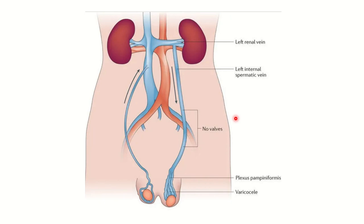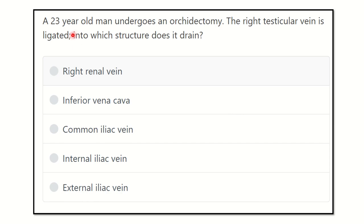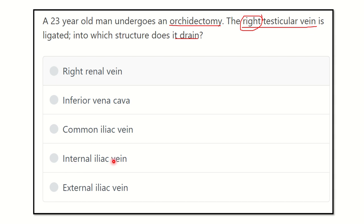Welcome to another session. A 23-year-old man undergoes an orchidectomy, meaning removal of the testis. The right testicular vein is ligated — into which structure does it drain? The options are: right renal vein, inferior vena cava, common iliac vein, internal iliac vein, and external iliac vein. We have to find out which vein the right testicular vein drains into.